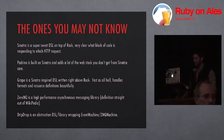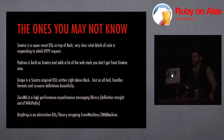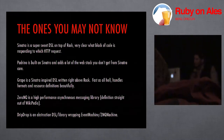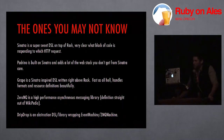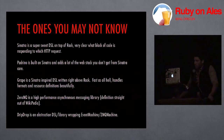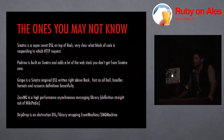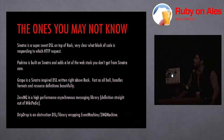Just a quick overview for people who may not know what these things are. Sinatra is a really sweet DSL — it's very clear and semantic, so you know exactly what's going on and what you're responding to. Padrino is built on top of Sinatra and adds a lot of the web stack you don't get with Sinatra, so some of the things you may be familiar with in Rails you get right out of the box. Grape is an awesome Sinatra-inspired DSL written to be an API layer. It's fast as hell, handles formats really nicely, and doing the resource definitions is really nice.